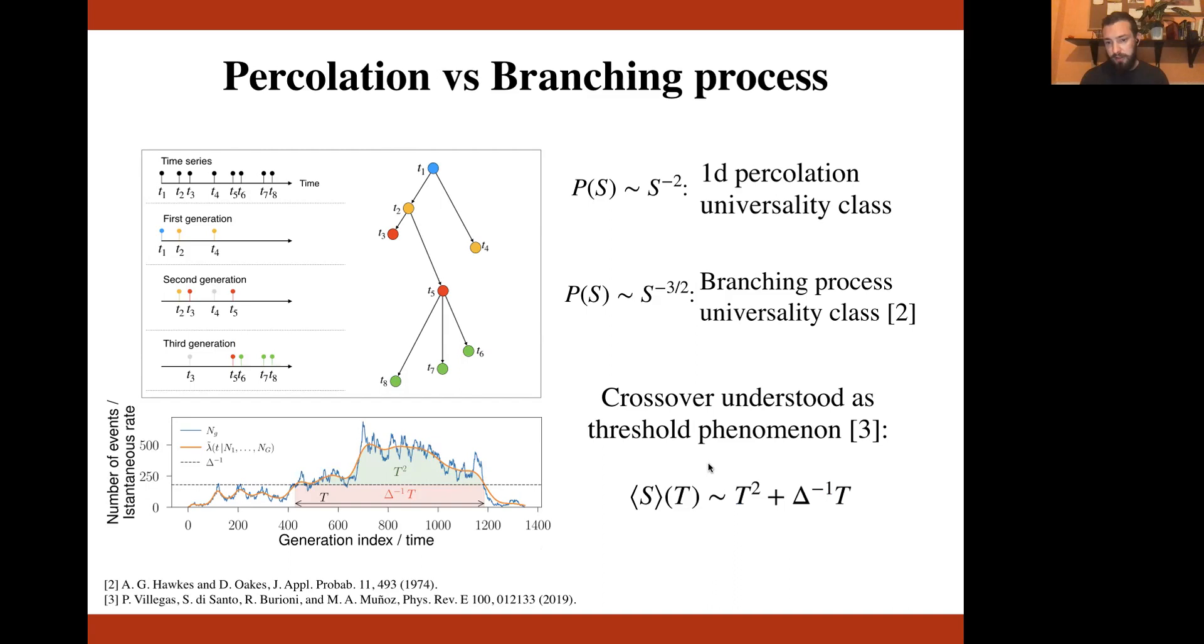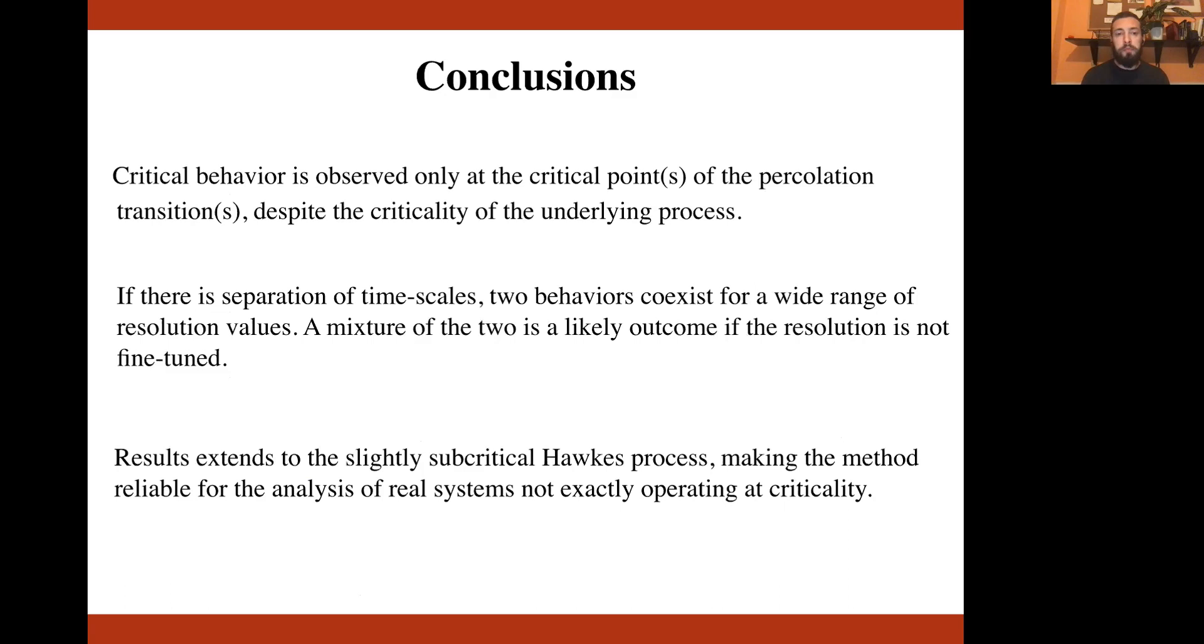Finally, we can use the scaling argument first presented by Villegas and collaborators to understand how and why the crossover exists and how it behaves. Specifically, we understand the crossover as a threshold phenomenon, looking at the average size of a burst of duration t. This size has two contributions, one that is a square of length t and height proportional to the inverse of the temporal resolution, and the other one that grows as t square because of the first passage time properties of a branching process. And thus, we have the pure scaling when one of the two regimes dominates. And we can actually even compute analytically how the crossover point scales with the temporal resolution.